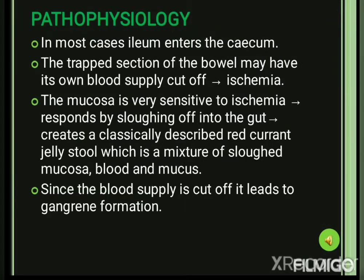Now the pathophysiological changes in intussusception: in most cases the ileum, which is the last part of the small intestine, telescopes into the cecum, the beginning part of the large intestine. The trapped section of the bowel has greatly reduced blood supply — ischemia. Because the mucosal lining is very sensitive to ischemia, it responds by sloughing off into the gut, creating the classical feature of red currant jelly stools — a mixture of sloughed mucosa, blood, and mucus.